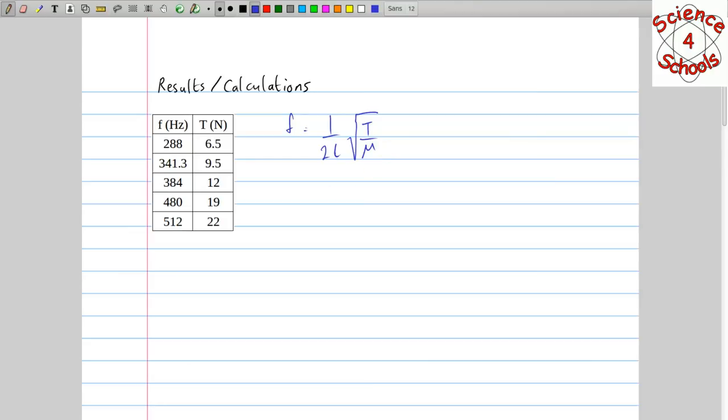So we use the same string every time. So this mass per unit length, the linear density of the string is always the same. And we also intentionally tried to keep the length of the string the same each time. So we have one variable that is the frequency, is equal to 1 over 2L times the square root of mu. And all of that is constant multiplied by another variable. And so when you have one variable is equal to a constant times another variable, that means that it's proportional. So just looking at this we should expect that the frequency is going to be proportional to the square root of the tension. But to verify this we have to graph it.